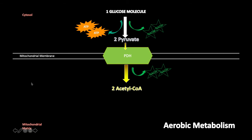Each pyruvate that goes through the PDH complex will create one acetyl-CoA. If we have two pyruvates, that gives us two acetyl-CoAs. And the acetyl-CoA is what will really start the Krebs cycle. Our body works through negative feedback — what happens at the end of a system will dictate what happens at the beginning. Think about a factory: high demand means high production; if product is stockpiling with low demand, production slows. Your body works the same way.